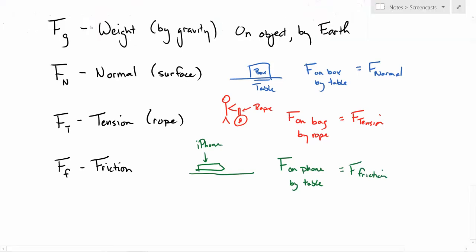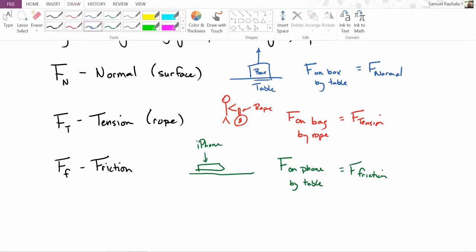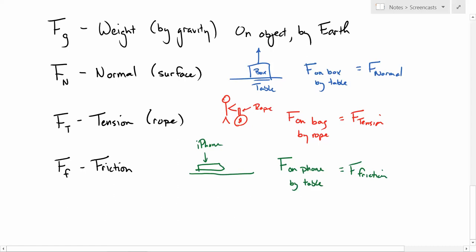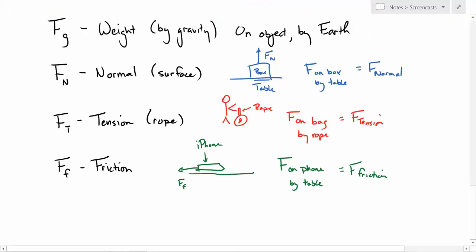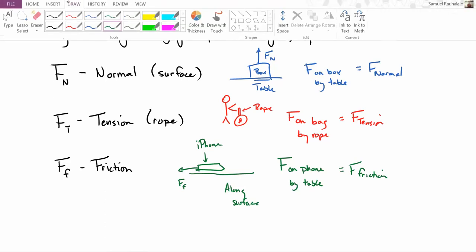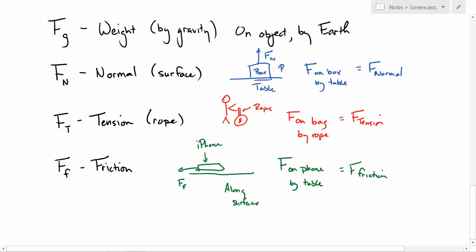Now we need to be careful here. This is where things get weird. The force on the box by the table is up, that's why it's a normal force. The force on the phone by the table, assuming that the phone is moving to the right, this force is to the left. Friction is always going to oppose motion. So friction acts along a surface, but the normal force acts perpendicular to surface.